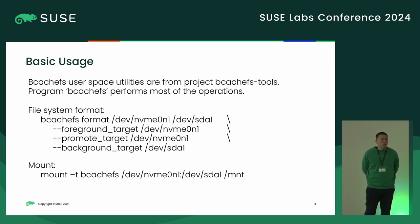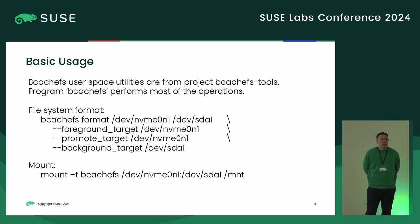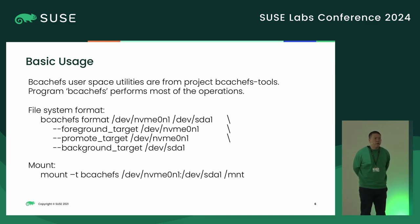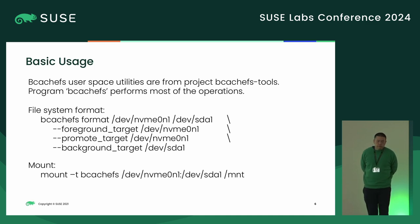Originally this program was written in C code, and then Kent started to write a wrapper to call the C code and began transferring from C to Rust. Now the main code is in Rust, with just the library still staying in C.